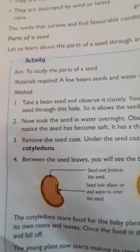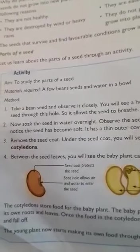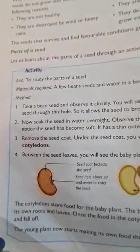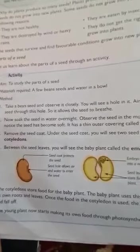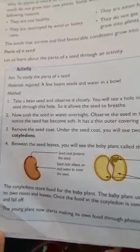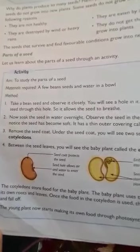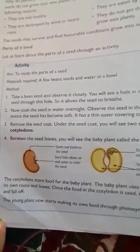Now let's look at the parts of a seed. The aim of this activity is to study the parts of a seed. Materials required: a few bean seeds and water in a bowl. Take a bean seed and observe it closely — you will see a hole in it through which air can enter the seed, allowing the seed to breathe. Now soak the seed in water overnight.